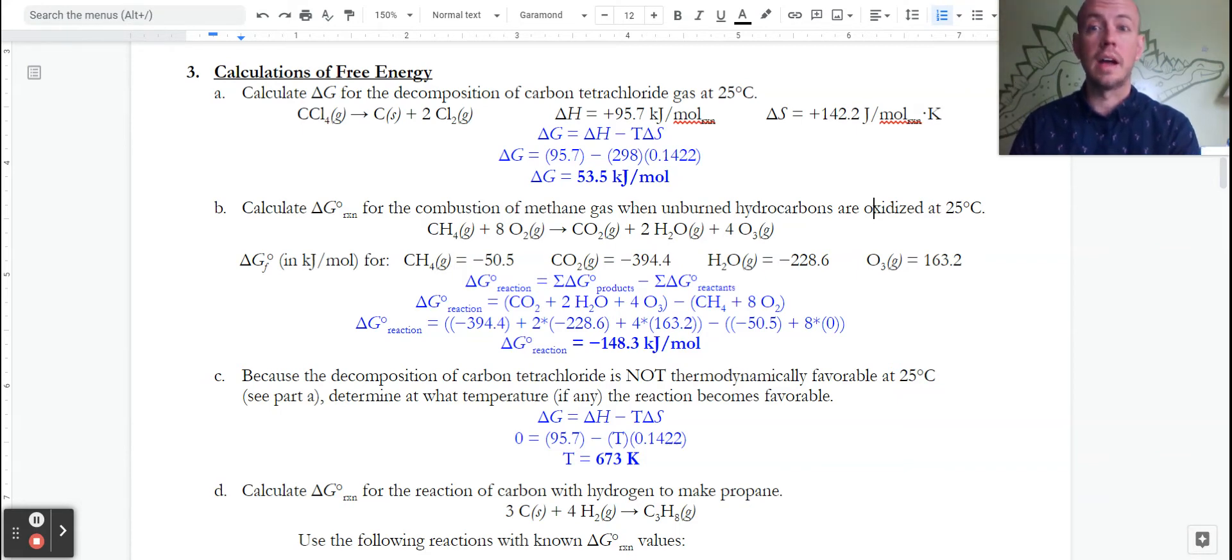We don't know the standard heats of formation of any of these things, so we can't do it that way. So we do delta H minus T delta S. The key is to remember your joules versus kilojoules. So here we have that 95.7 in terms of kilojoules. So we need to change that 142.2 to kilojoules as well. The temperature of 25 goes to 298 because we're going to be dealing in Kelvin.